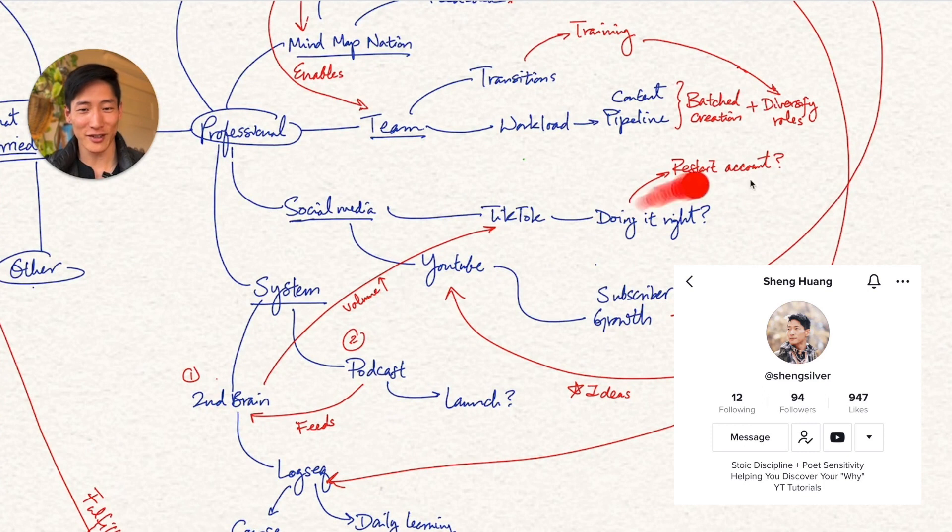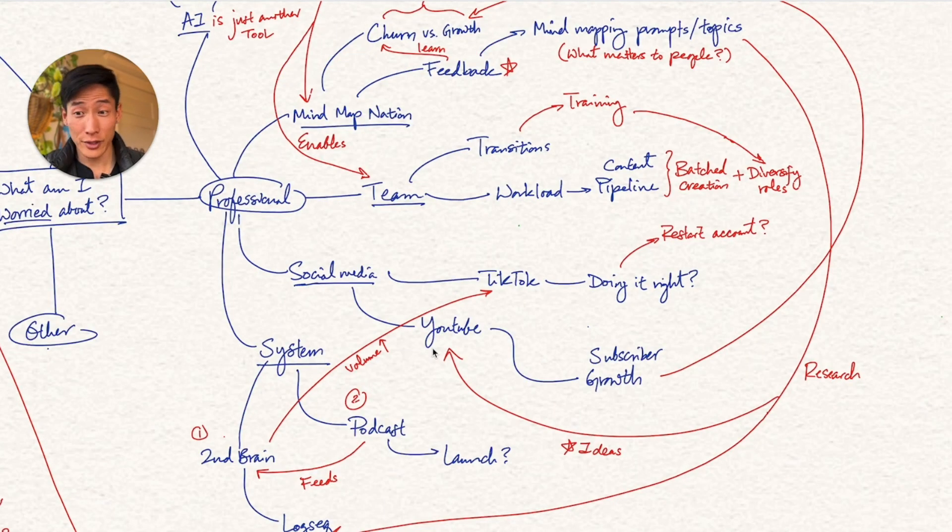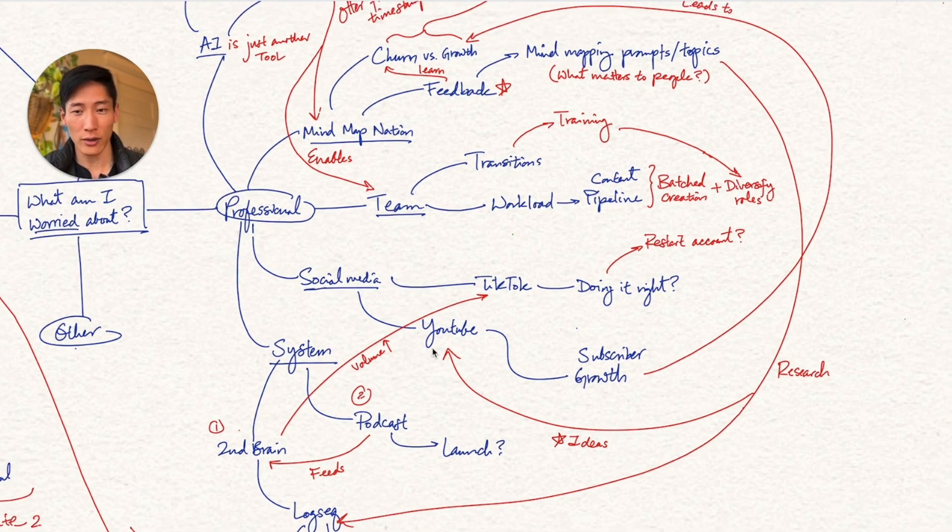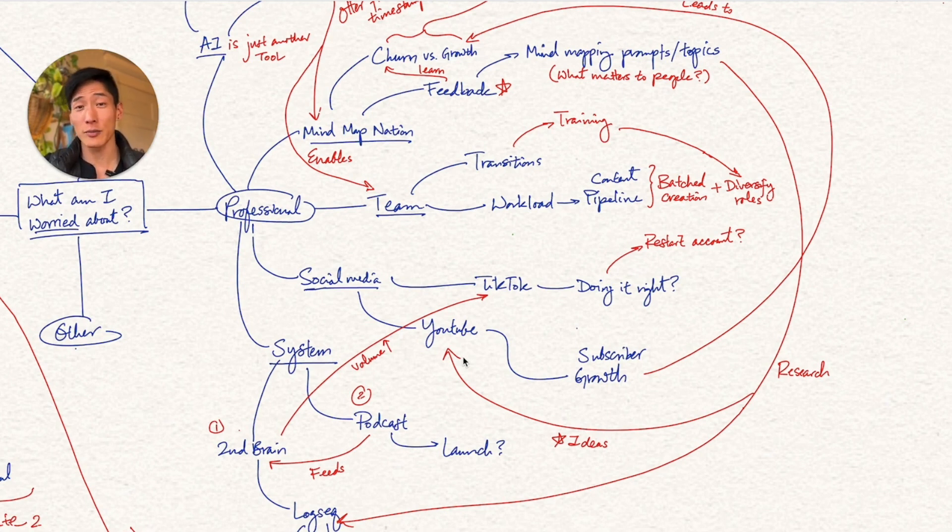Social media wise, I'm asking myself, do I want to restart my account on TikTok? And for YouTube, I'm starting to recognize that the idea of my videos is so critical. It all starts with a good idea. And then for that, I don't want to create in isolation. I want to create things that are actually valuable for you guys. So in many ways, asking for feedback from Mind Map Nation will also give me better ideas for YouTube. That's actually the solution coming from Mind Map Nation. That's why I drew an arrow from Mind Map topics and prompts over to YouTube.